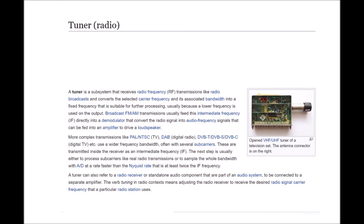More complex transmissions, like PAL, NTSC, DAB, DVB-T, DVB-S, DVB-C, digital TV, etc., use a wider frequency bandwidth, often with several subcarriers. These are transmitted inside the receiver as an intermediate frequency, IF. The next step is usually either to process subcarriers, like real radio transmissions, or to sample the whole bandwidth with AD, analog to digital, conversion, at a rate faster than the Nyquist rate. This is at least twice the IF frequency.